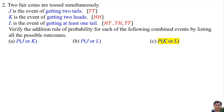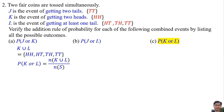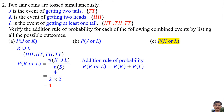For part C, the probability of K or L: K ∪ L has elements {HH, HT, TH, TT}. The probability of K or L is 4/4 = 1. Using the addition rule, the probability is also 1, so the addition rule of probability is verified.